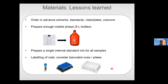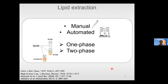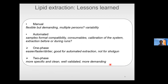Regarding lipid extraction, studies have been published using different types of extraction — either manual or automated with robotic systems — and one-phase extraction. One example is butanol-methanol, which we use frequently, but we also have experience with two-phase extractions: MTBE if you want to collect lipids on the upper phase, or chloroform-methanol if you want to collect them from the lower phase. All are equally valid with their own pros and cons.